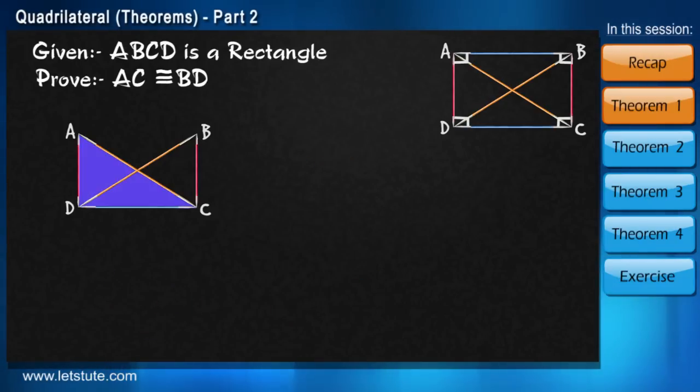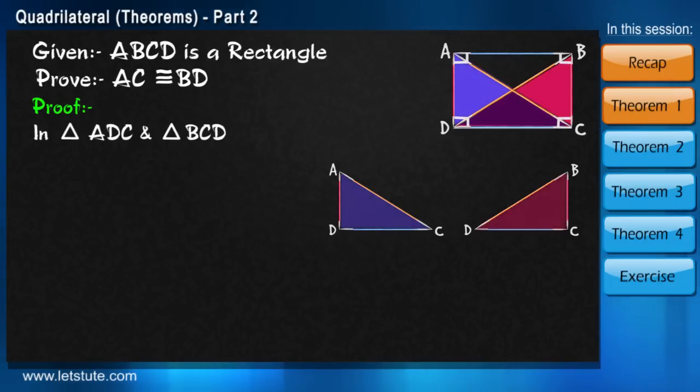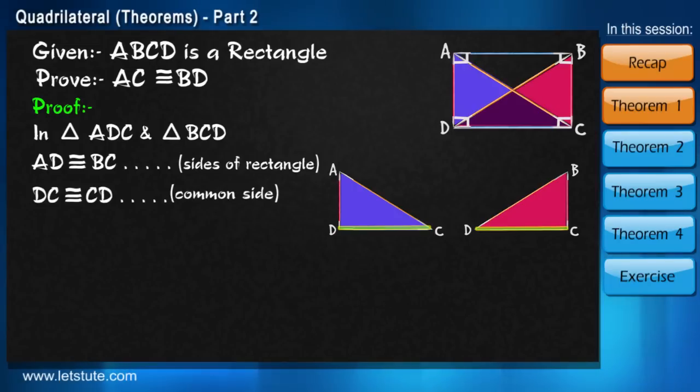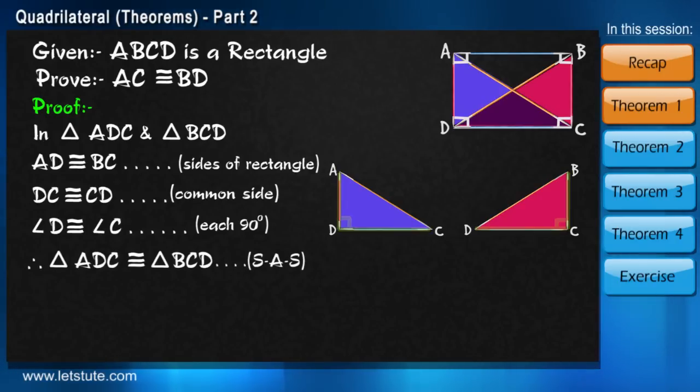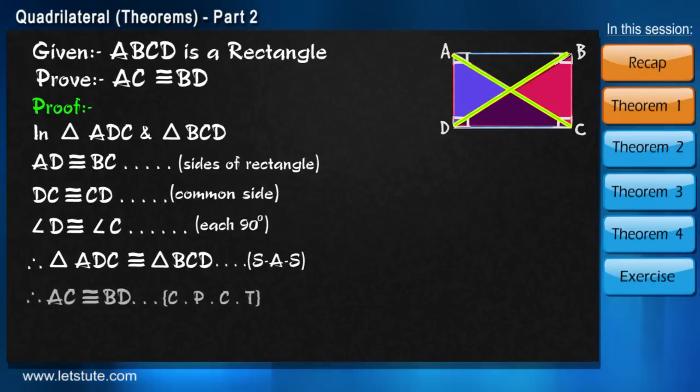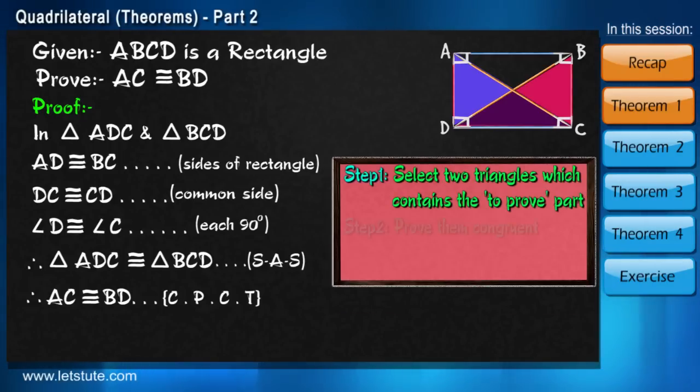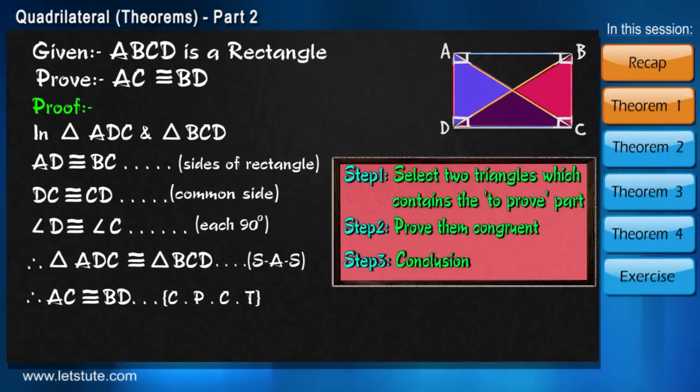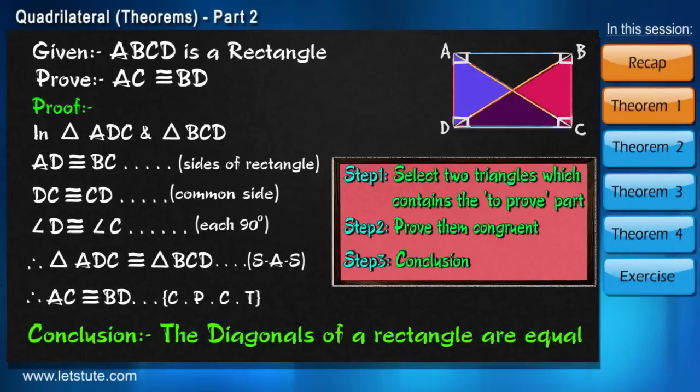So here we take these two triangles which have two equal sides, one common side and two angles which are 90 degrees. So by side angle side, they are congruent. And therefore the diagonals are also congruent as they are the corresponding sides of congruent triangles. Wasn't that simple? We just need to follow three basic and simple steps. And in this way we prove the diagonals of a rectangle are always equal.